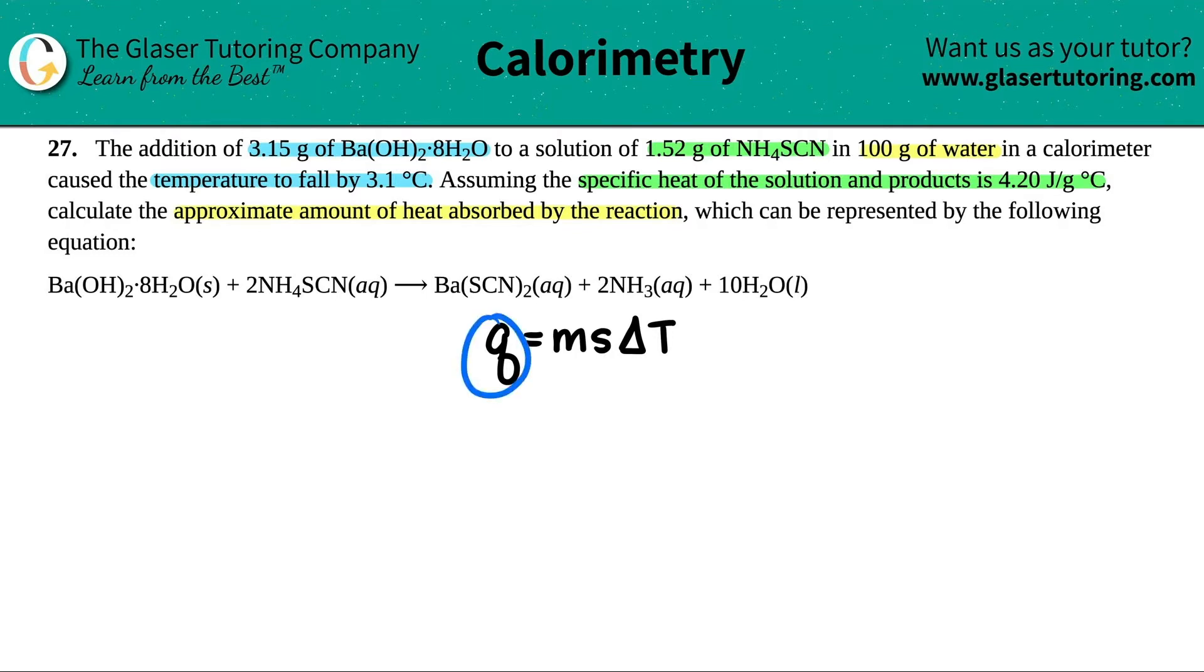We want to find Q, which means we should know the mass, the specific heat, and the change in temperature. Let's start with the mass. The mass of the solution is all the solutions added together. We had three different weights: 3.15 grams of barium hydroxide octahydrate, 1.52 grams of NH4SCN, and 100 grams of water.